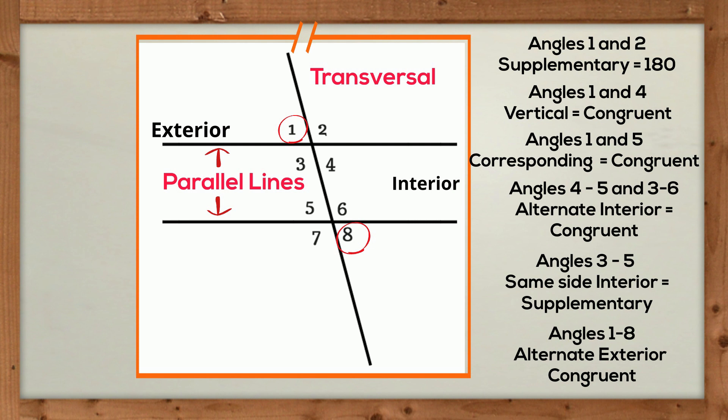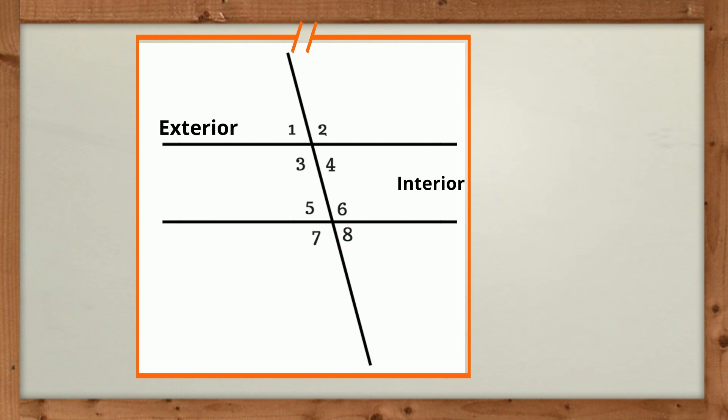Now I didn't name every single angle here, but gave examples so you can locate different ones. Let's look at a quick question. Let's find angles 1, 2, 3, and 4 if you know that the angle measure of 1 is 60 degrees.